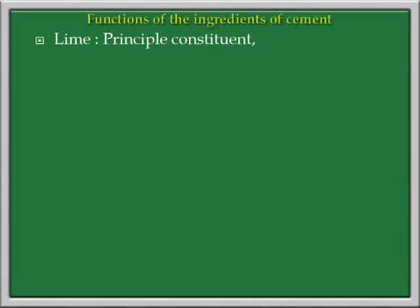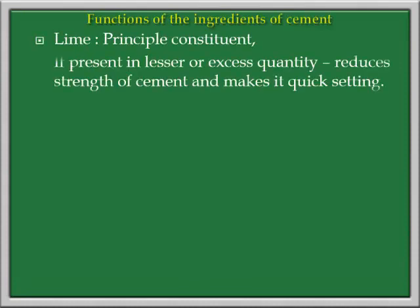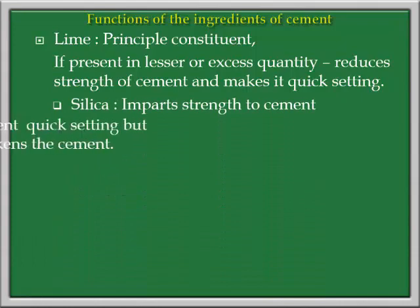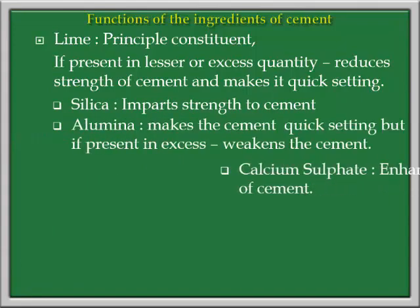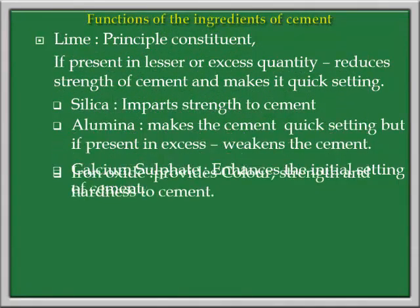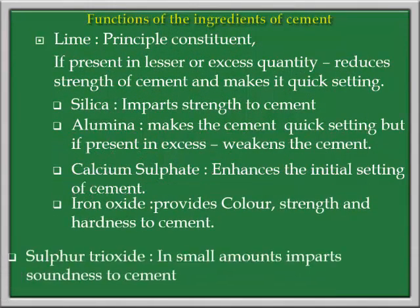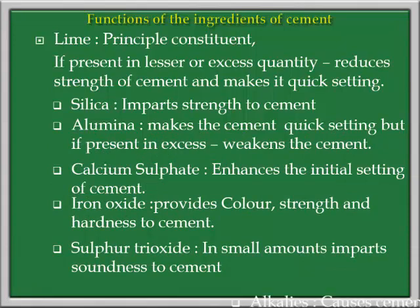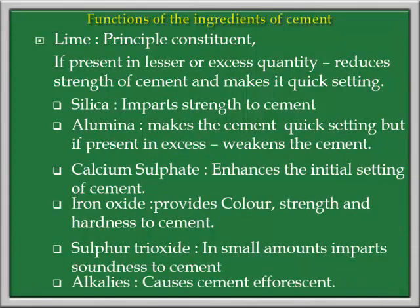Now we have to see the functions of each ingredient in the cement. Lime is the principal constituent; if present in lesser or excess quantity, it reduces the strength of the cement and makes it quick setting. Silica imparts strength to the cement. Alumina makes the cement quick setting, but if present in excess it weakens the cement. Calcium sulphate enhances the initial setting, which is the most important ingredient. Iron oxide provides the color. Sulphur trioxide imparts soundness to the cement, and alkalis cause cement efflorescence.